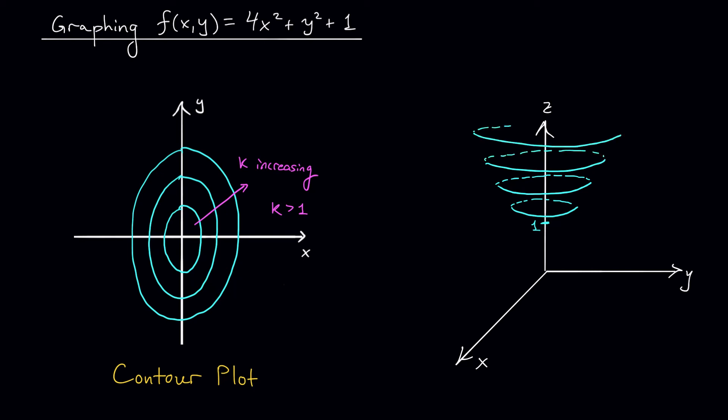This graph looks pretty similar to what we had in the last video, right? Except this time, it doesn't reach all the way down to z equals 0. It has a minimum height of z equals 1. And it's not so circular, right? It's more long and elliptical. Fittingly, this is called an elliptic paraboloid.